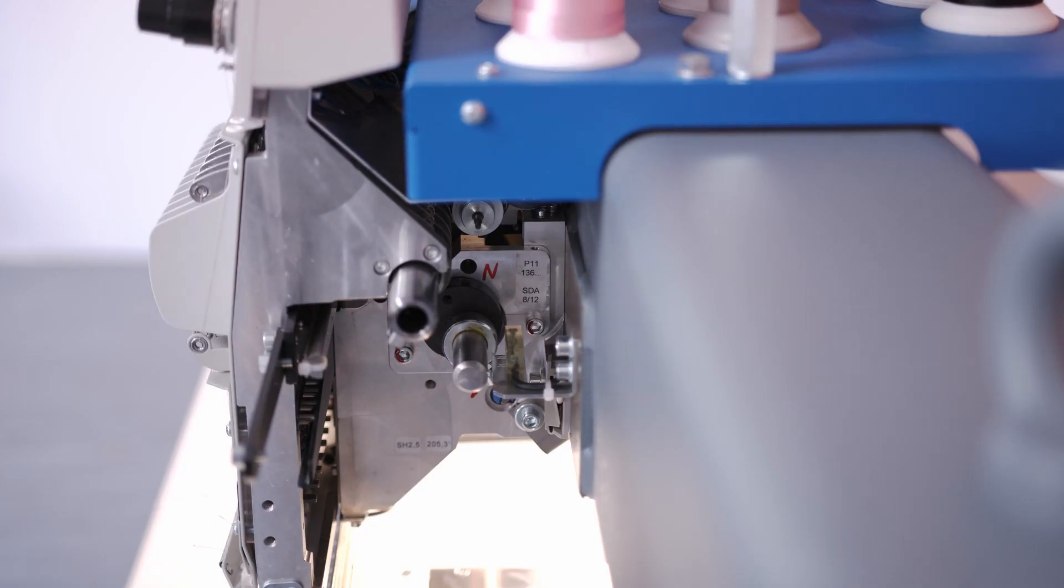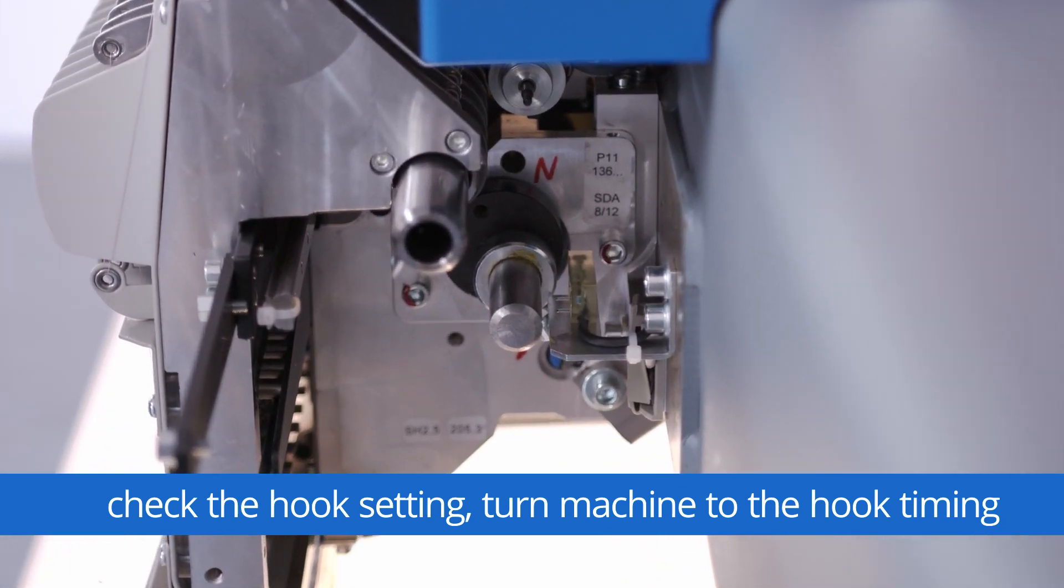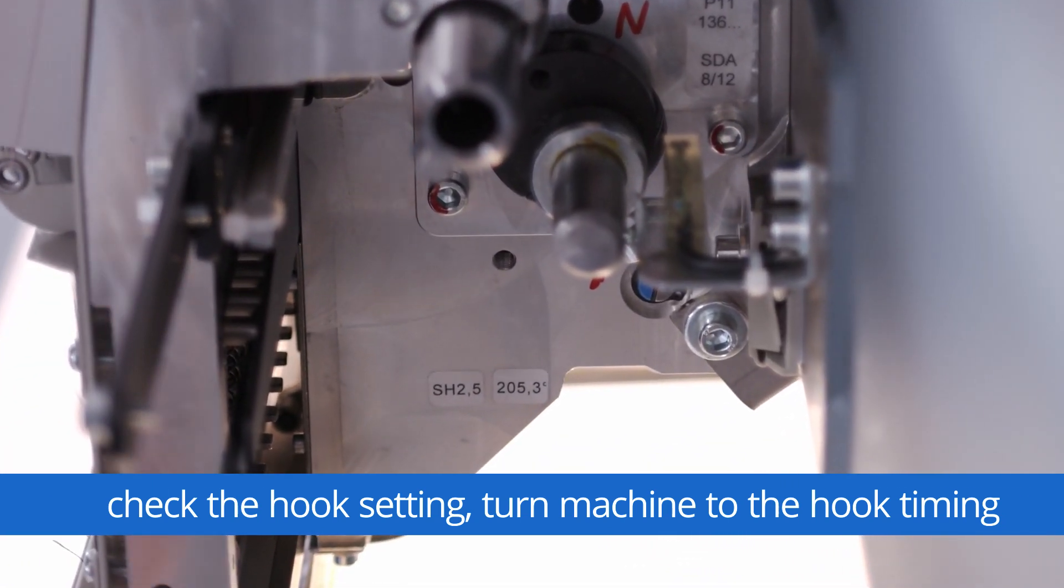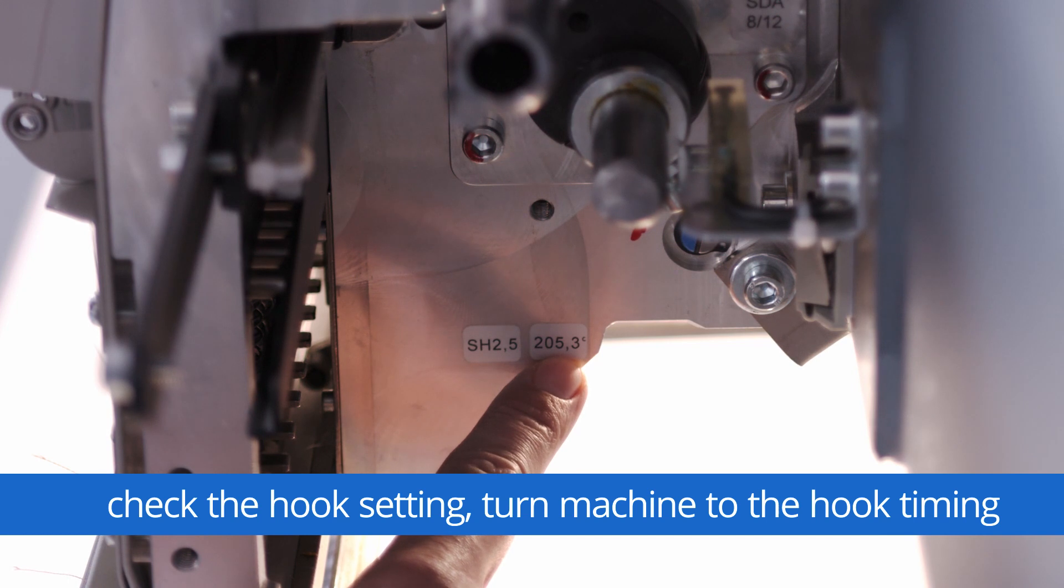To prove if the upper and bottom shaft are aligned properly we will check now the hook setting. Therefore we have to turn the machine to the hook timing point that you find on the sticker on the first head on the right side. It has to be between 205 and 206.